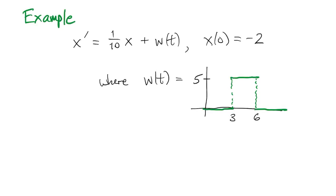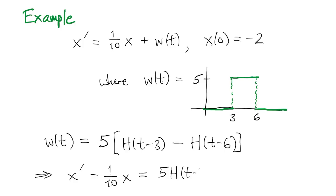Here's an example. We're going to solve with a forcing function that is 5 between times 3 and 6 and 0 everywhere else. Wt is really a windowing function. In other words, it's just a constant value between two times. And we can write it in terms of two step functions like this. One that turns on at time 3, and another that turns off at time 6.